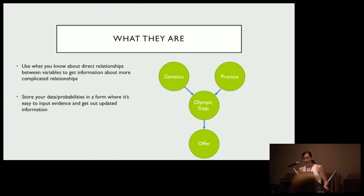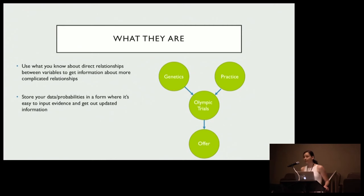That's what they are and why you want to use them — they make things more intuitive and more explanatory. You can also store your probabilities in a form where it's easy to input evidence and get out updated information. For example, once you know the overall probability distributions and how variables relate, you might go forward: given that an athlete practices a lot but has weak genes, what are her expectations? Or you might want to backtrack: if an athlete did great at the trials, what's your best guess about their genetic status?